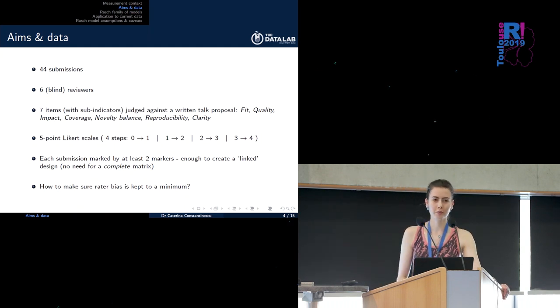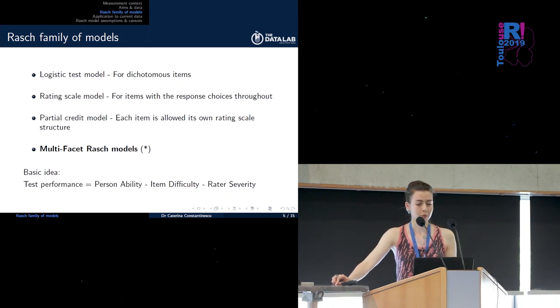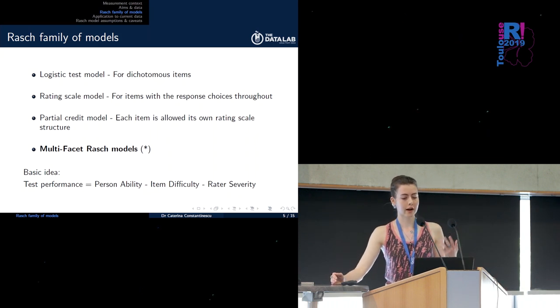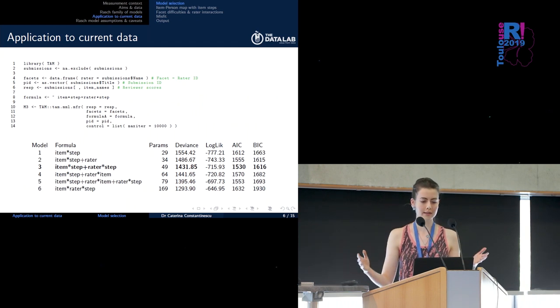So the answer to this problem is pretty much Rasch models which include a variety of subtypes like the rating scale model for items with the same response choices throughout, as well as multi-facet Rasch models, the ones used for this project where the basic idea is that test performance is seen as a function of person ability contrasted against item difficulty and rater severity each of these being a separate facet.